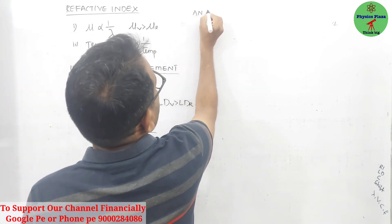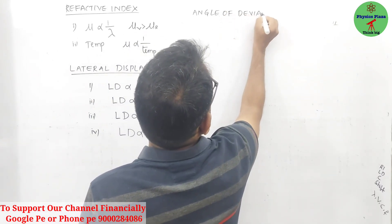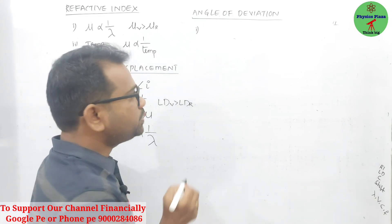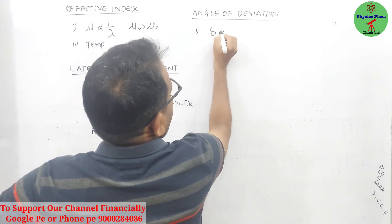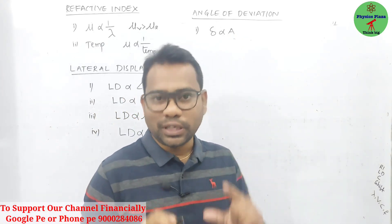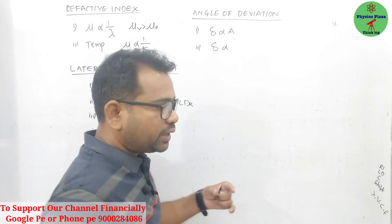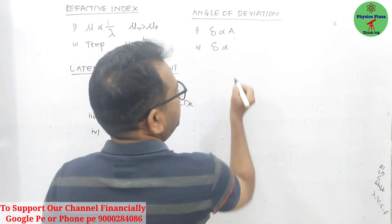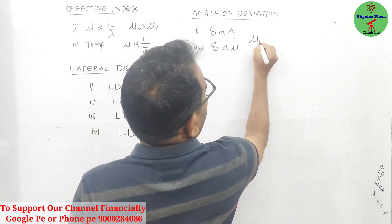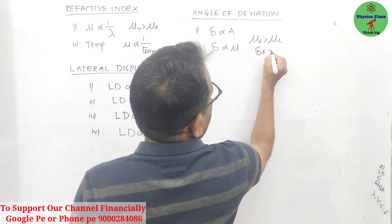The third topic is angle of deviation. The first factor is the angle of the prism — angle of deviation is directly proportional to the angle of the prism. For a thick prism, angle of deviation is more than that of a thin prism. Second, angle of deviation also depends on the refractive index of the material — for flint glass, refractive index is more than crown glass, hence angle of deviation for flint glass is more.